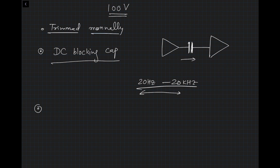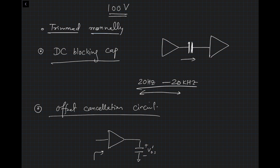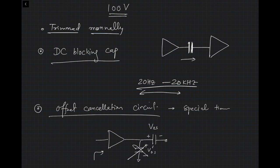The third solution is an offset cancellation circuit. Here you go through an offset cancellation cycle: during a calibration phase, you store the offset on a capacitor as VOS′, and in the next phase subtract it out before the next stage. This requires special timing provisions since you need to cycle through the offset cancellation sequence. These are the various techniques people use to cancel out offset voltage.